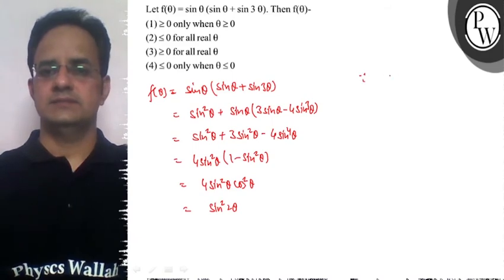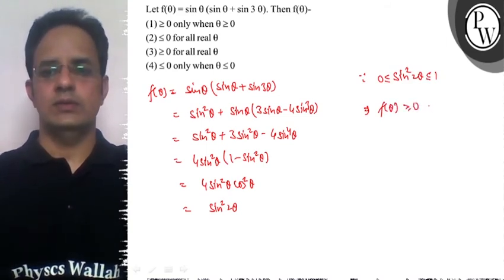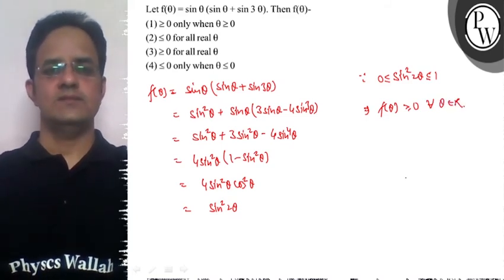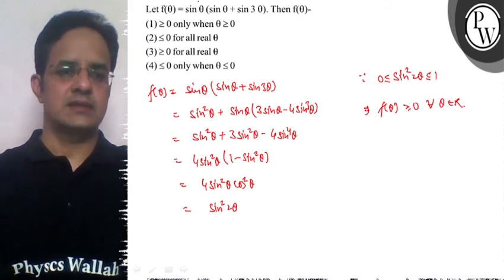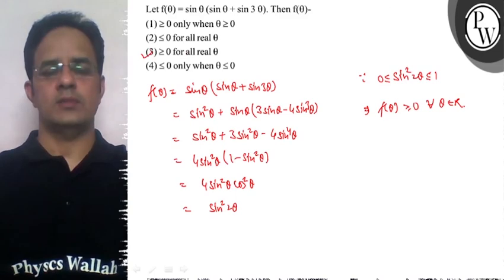Now since sin²(2θ) is a positive number, it is greater than or equal to 0 but less than or equal to 1. So we can say that f(θ) ≥ 0 for all θ ∈ R. Therefore, the final answer is f(θ) ≥ 0 for all real θ. Option 3 is the correct option.